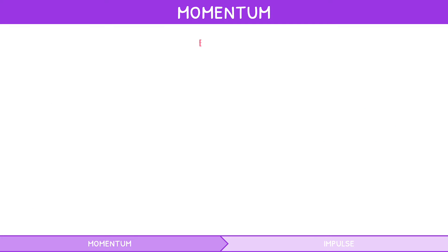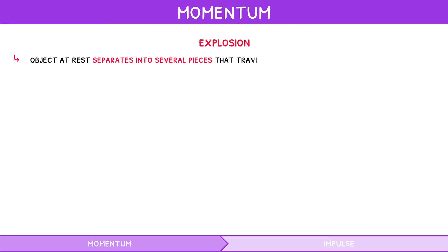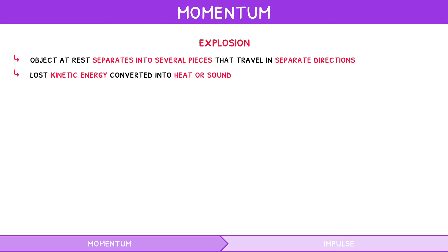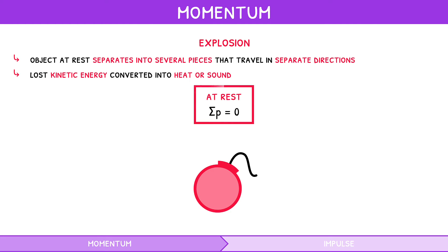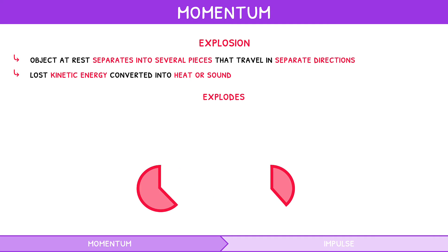During an explosion, an object at rest separates into several pieces that travel in separate directions. The lost kinetic energy has been converted into heat or sound, but the law of conservation of momentum still applies. The explosive at rest has a momentum of 0, so if it explodes into n number of fragments, 0 equals the sum of the momenta of the n fragments produced.